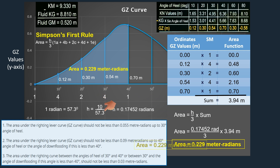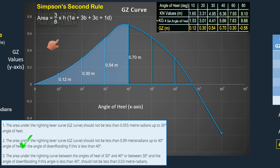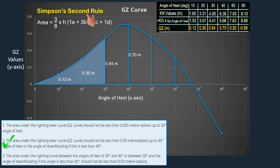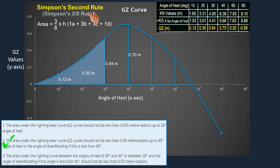If we compare this with the second stability criterion, we can confirm that the vessel meets the mandatory requirements based on her present condition. Let's examine Simpson's Second Rule to see if we can use it to calculate the area under the GZ curve up to a 30 degree angle of heel. Simpson's Second Rule has a coefficient of three-eighths, which is why it is also called Simpson's Three-Eighths Rule.